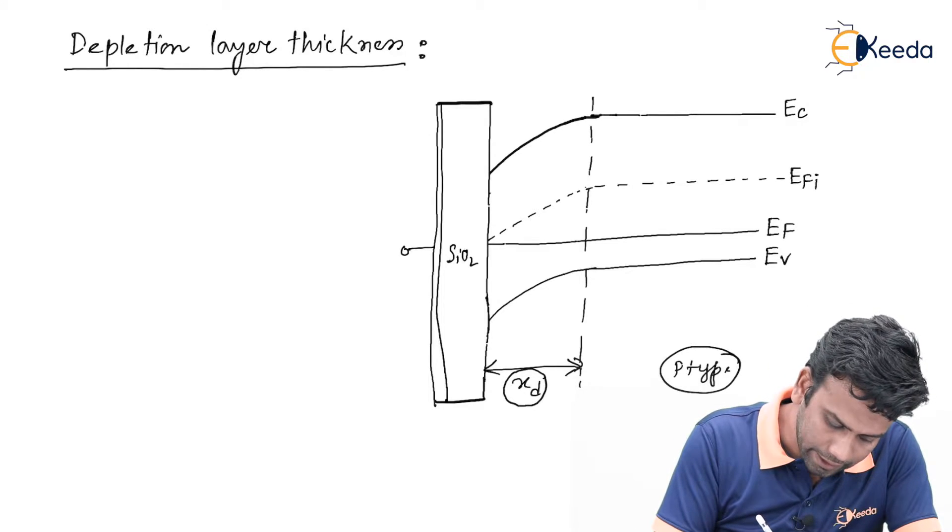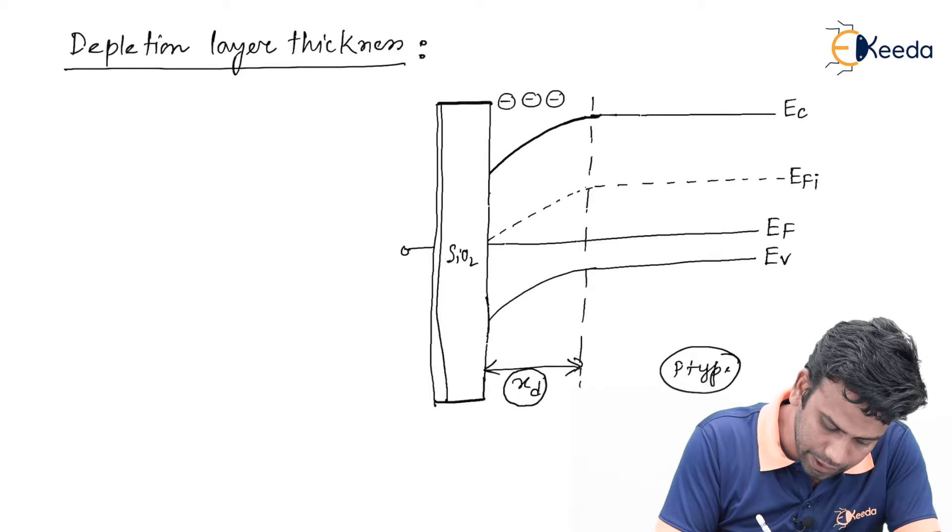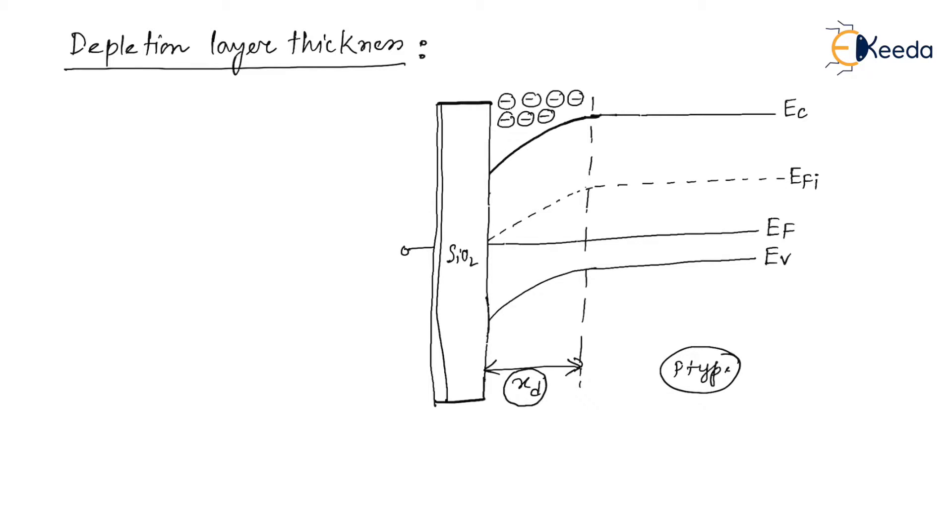We can say that negative acceptor ions have been accumulated here and these are the depleted charge carriers. This is SiO2 and this is the P type substrate.